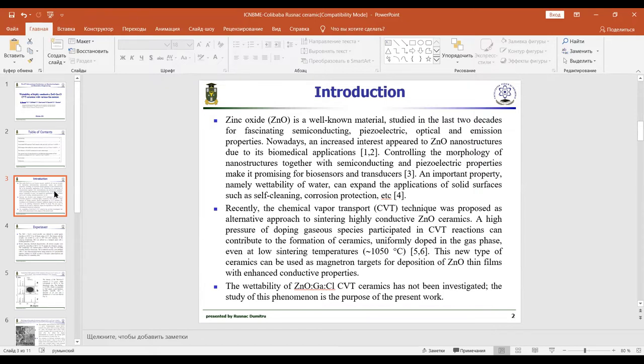Recently, the chemical vapor transport CVT technique was proposed as an alternative approach to sintering highly conductive zinc oxide ceramics. A high vapor pressure of doping gas species participating in CVT reactions can contribute to the formation of ceramics uniformly doped in the gas phase, even at low sintering temperatures of approximately 1050 degrees Celsius.